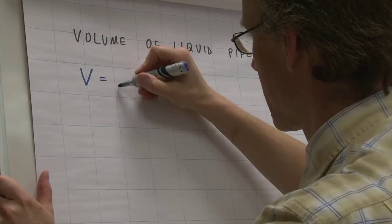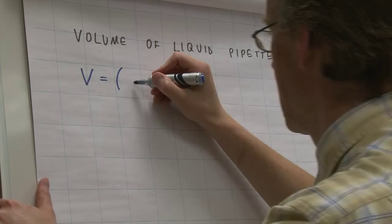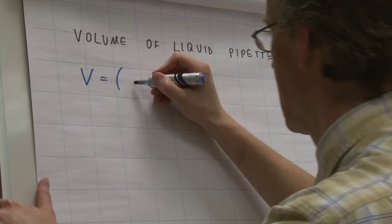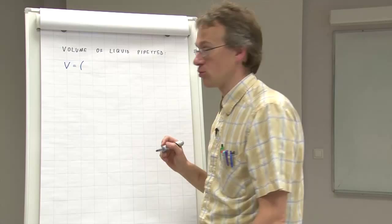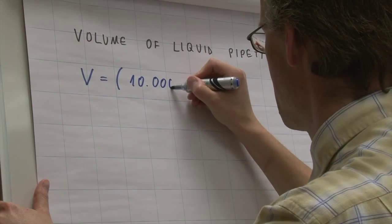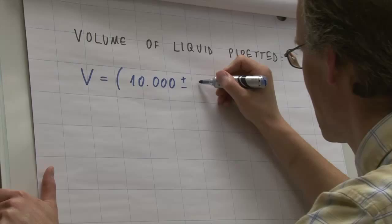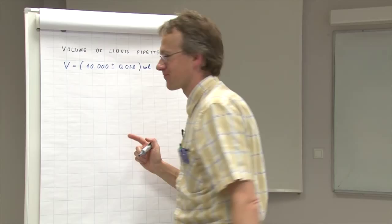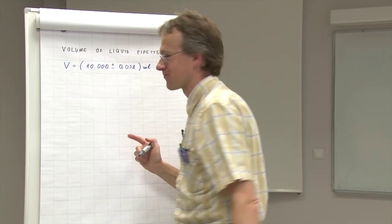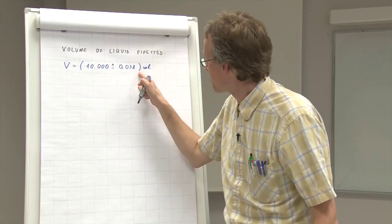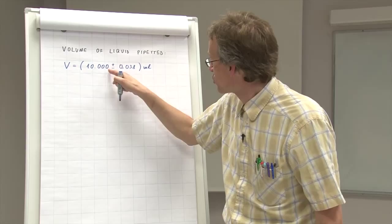It is equal to, and our nominal volume of the pipette that we used was 10 milliliters. Our uncertainty, and here we put it as expanded uncertainty, is 0.038 milliliters. We now close the brackets and write the unit. These brackets are needed to denote that the unit goes both for the uncertainty and for this 10 also. So that instead of writing milliliters two times people use brackets and put milliliters behind there.